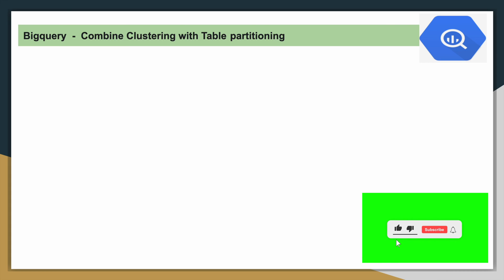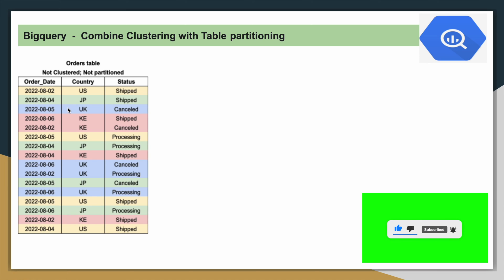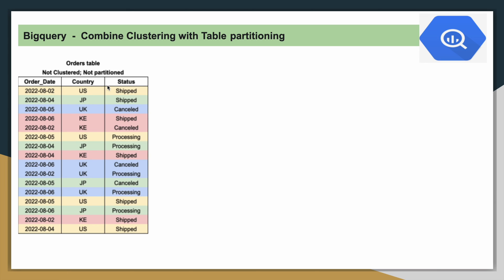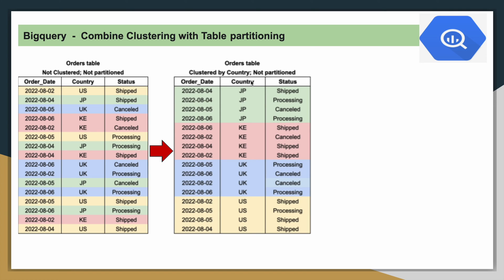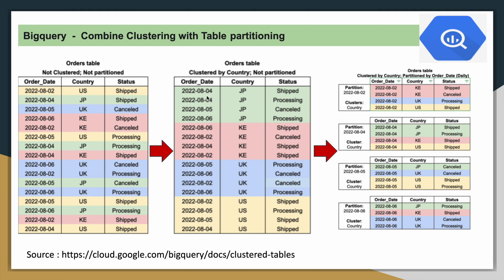Now let's look at combining clustering with table partitioning. Take a table that is neither clustered nor partitioned. If you cluster it using country, the data will be sorted based on country code. If you further partition this table based on date, you will have four partitions, and inside each partition the data is again sorted based on country. This way you can take advantage of both partitioning and clustering, further optimizing query performance and reducing query cost.